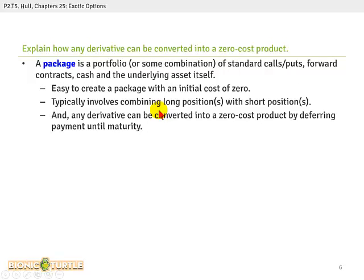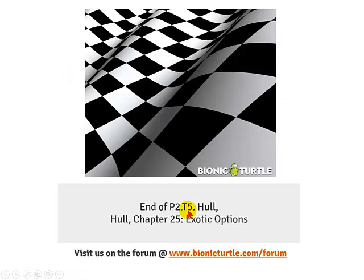A package is a portfolio or some combination of standard calls and puts, forward contracts, cash, and the underlying asset itself. It is easy to create a package with an initial zero cost, which typically involves combining a long and short position. And that concludes Hull's chapter on exotic options. Thank you.